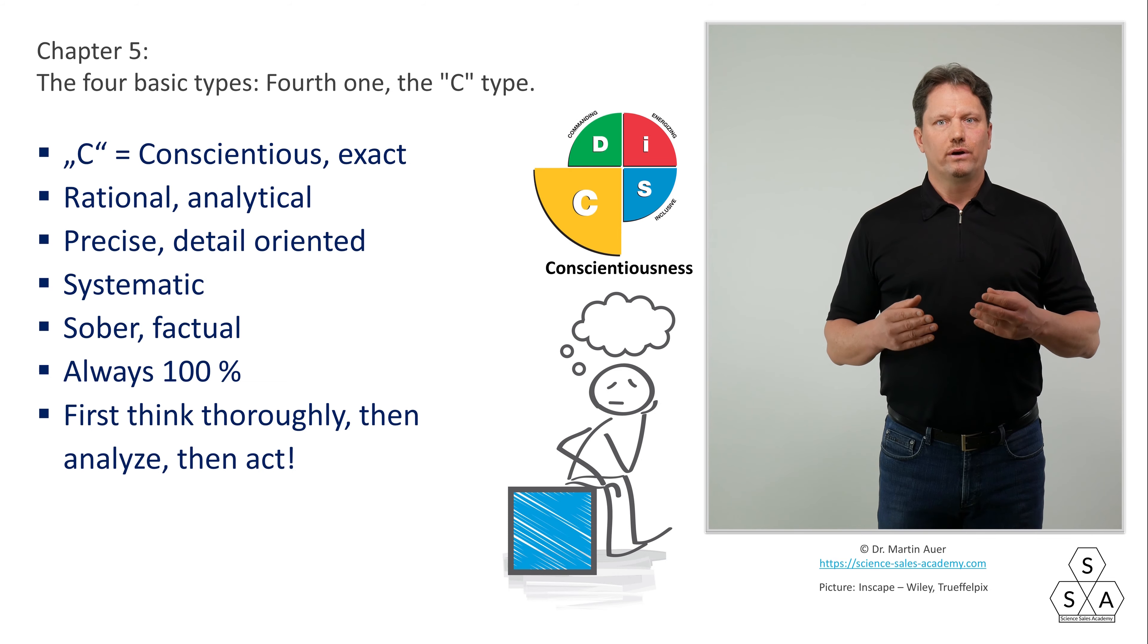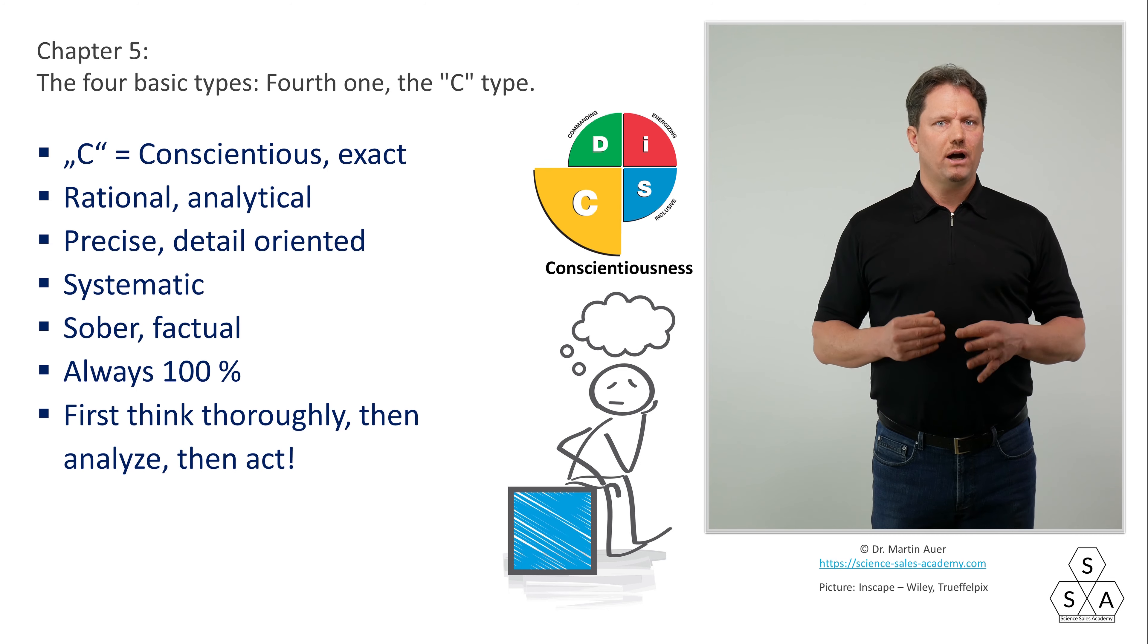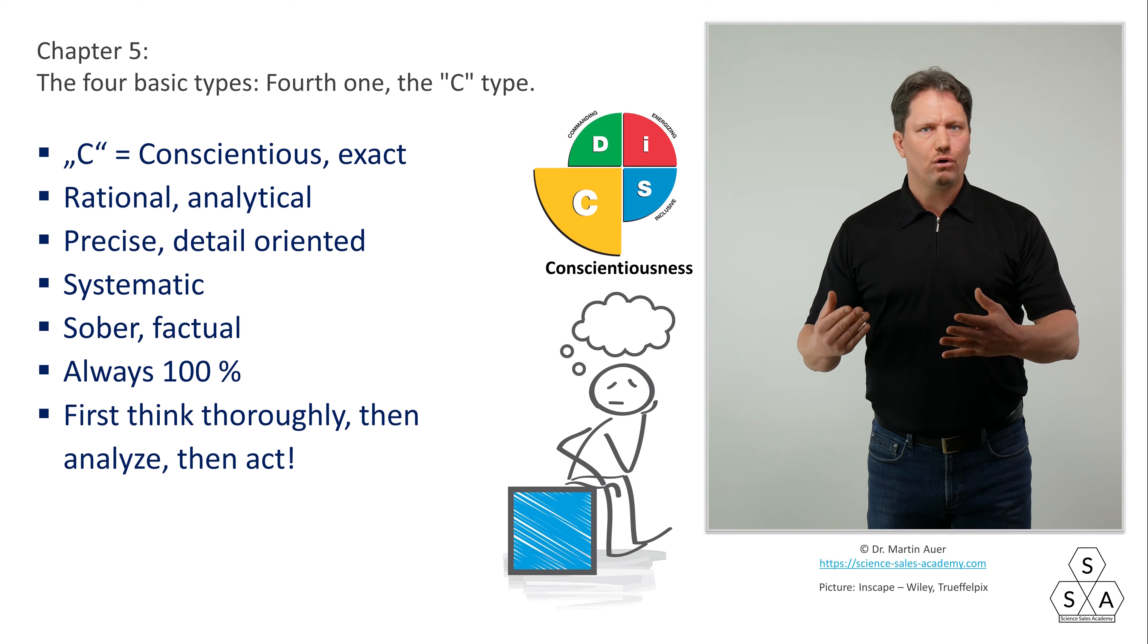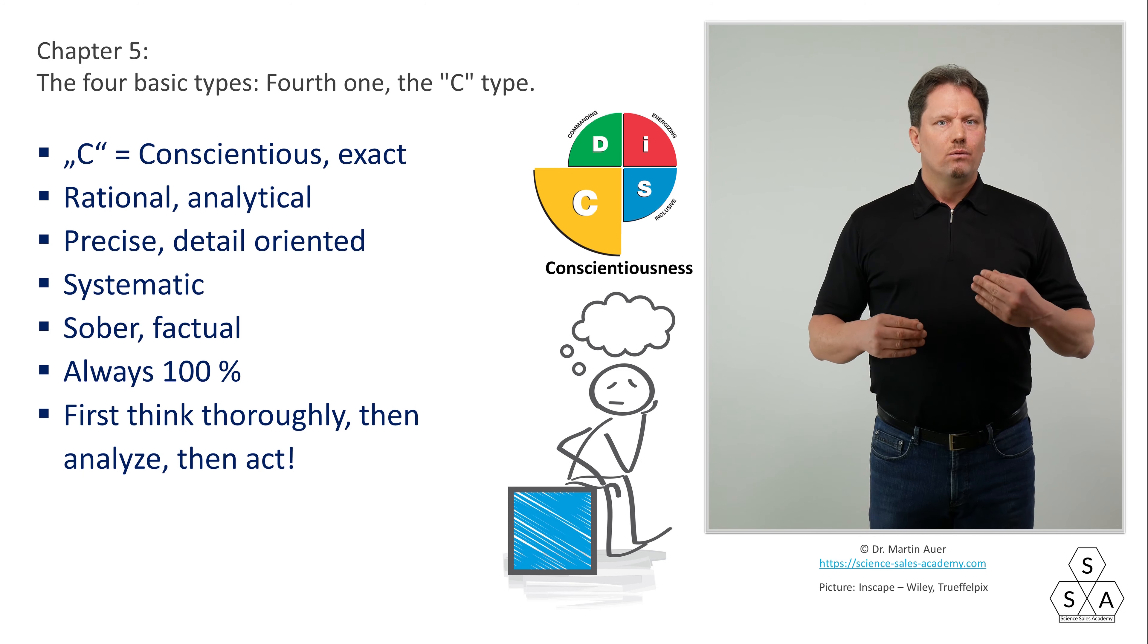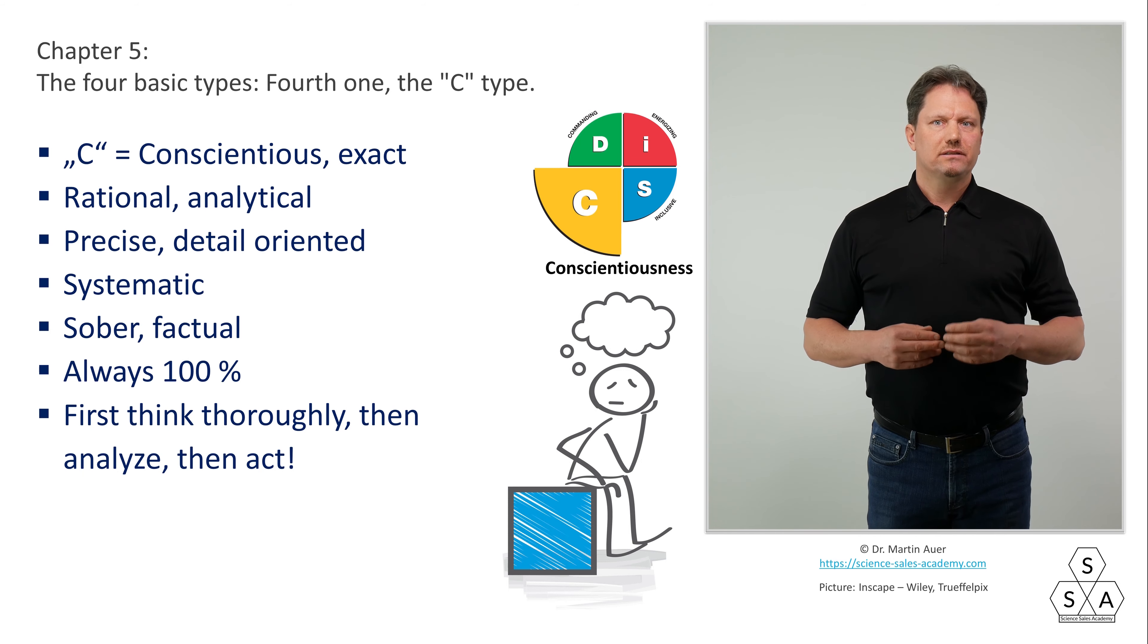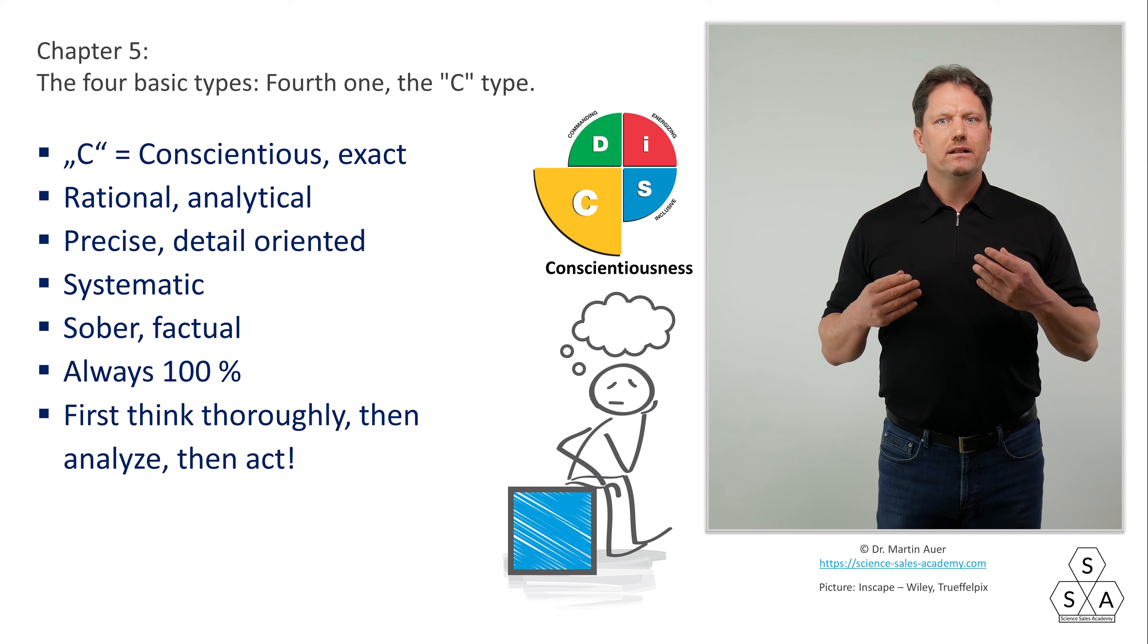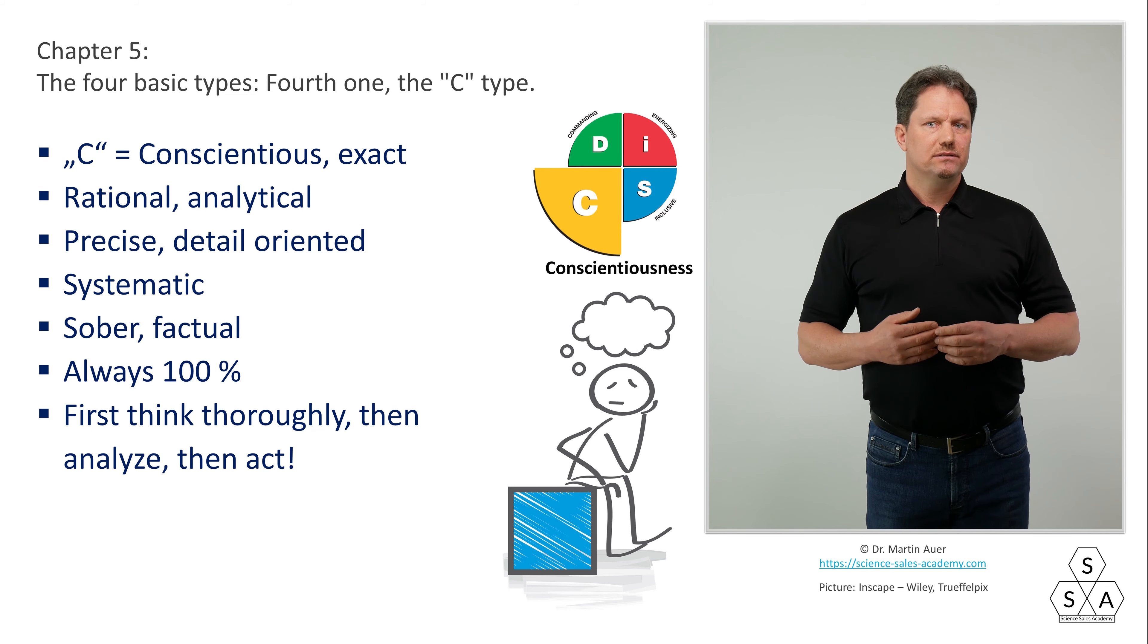A C-type must have considered everything to the last detail and understand it 100% before they can come to a decision or even consider the next step. The absolute correctness of what they say and their analysis is more important for the C-type than anything else. Their motto is: first think thoroughly, then analyze, then act. While, for example, the D-type or even more the I-D-type, for them pure action may come first just to move forward and keep going.